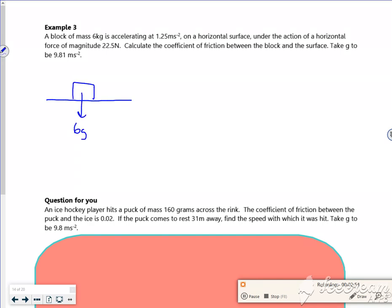So I've got 6G. I've got R acting up. It's got a horizontal force of 22.5. It's got friction acting against it. It's got an acceleration of 1.25.